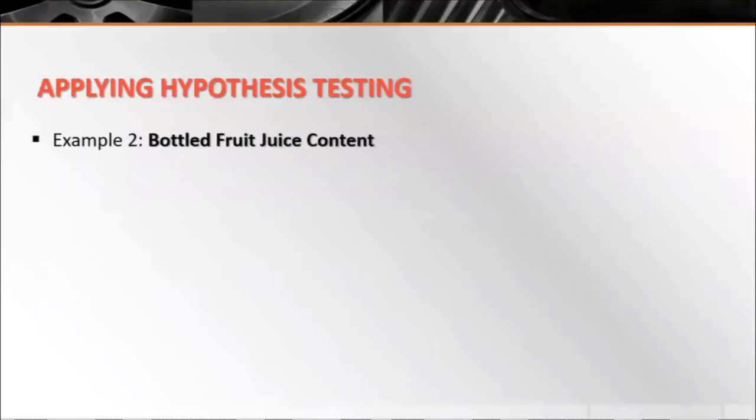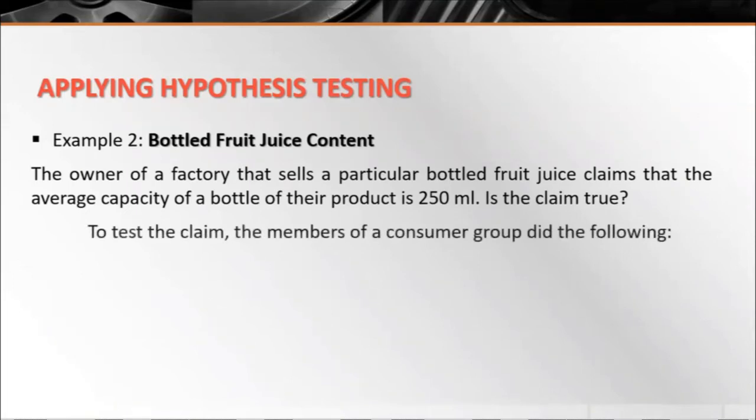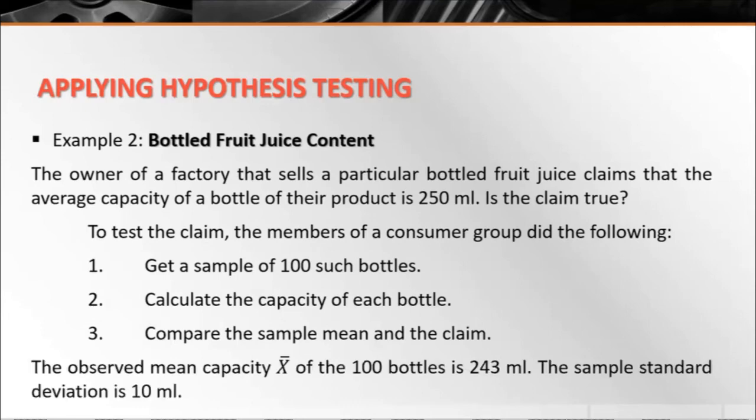Next is applying hypothesis testing. Example number two: Bottled fruit juice content. The owner of a factory that sells a particular bottled fruit juice claims that the average capacity of a bottle of their product is 250 ml. Is the claim true? To test the claim, the members of a consumer group did the following: First, get a sample of 100 such bottles. Second, calculate the capacity of each bottle. And third, compare the sample mean and the claim. The observed mean capacity, x̄, of the 100 bottles is 243 ml. The sample standard deviation is 10 ml.